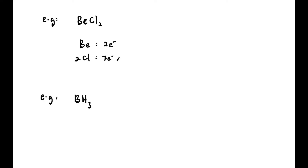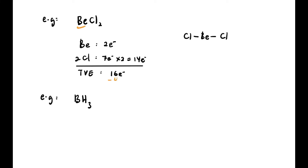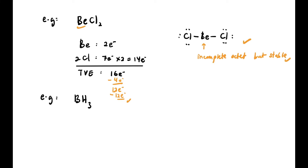For example, BeCl2: Be has 2 electrons, Cl has 7 × 2 = 14, so total valence electrons = 16. Central atom is Be, so we make two bonds using 4 electrons, leaving 12. We place all 12 on the Cl atoms. In this case Be is incomplete octet, but it is stable — so we leave it as is.